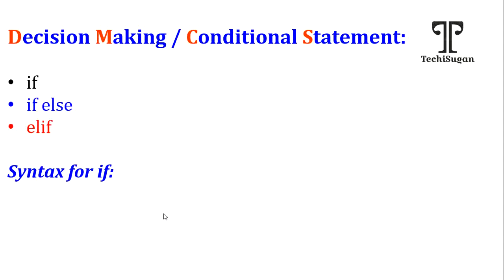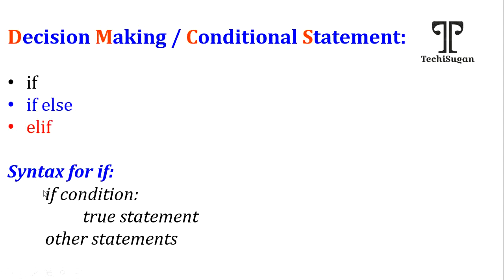First, we will look at the syntax of the if statement. The syntax is: if condition, followed by the true statement. Those aware of C programming will know the if statement, but there is a slight variation in Python. In C, the condition is given inside parentheses and the true statement inside curly braces. In Python, you do not use any parentheses or curly braces — everything is defined using indentation. You write: if, condition, colon, and the body of the if statement follows after the indentation space.